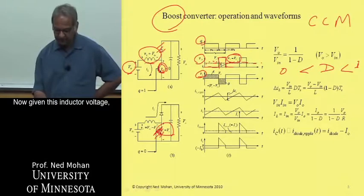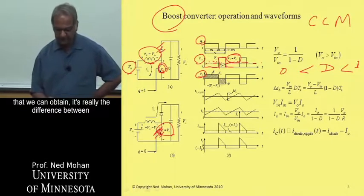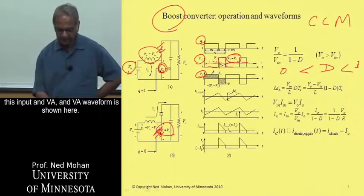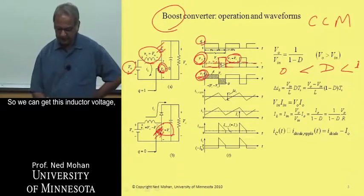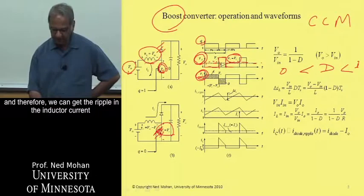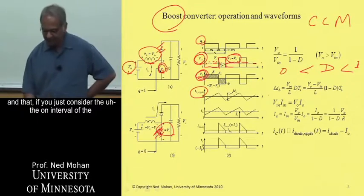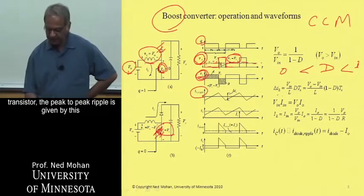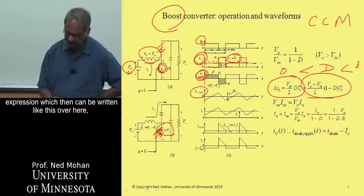Given this inductor voltage that we can obtain, it's really the difference between this input and VA, and VA waveform is shown here. So we can get this inductor voltage, and therefore we can get the ripple in the inductor current. If you just consider the on interval of the transistor, the peak to peak ripple is given by this expression, which then can be written like this over here.